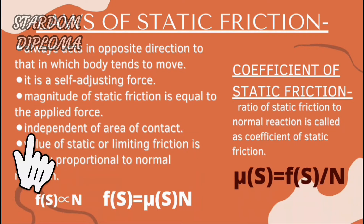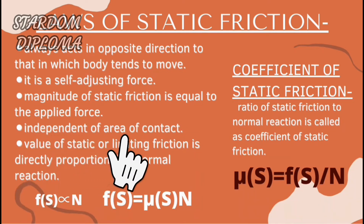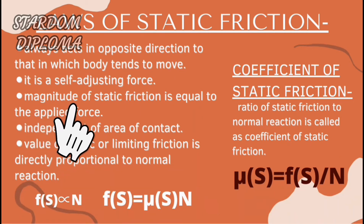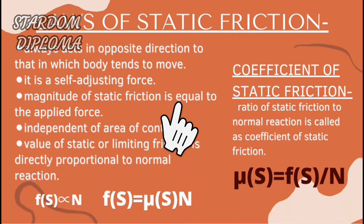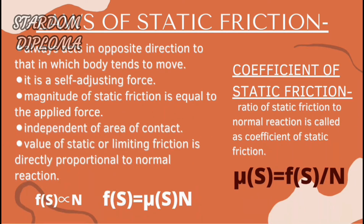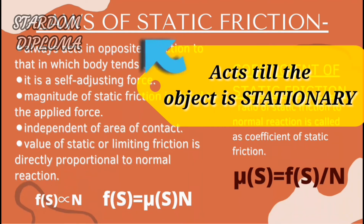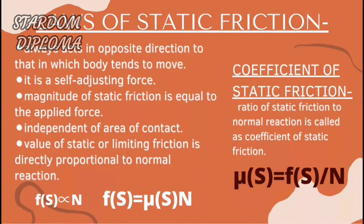The second law is that it is independent of the area of contact. Whether the area of contact is small or large, frictional force will act on the body. The third law is that the magnitude of static friction is equal to the applied force. In static friction, the body tends to remain stationary, so to remain stationary, all the forces acting on that body should be balanced.